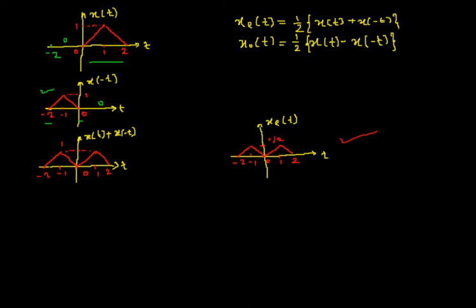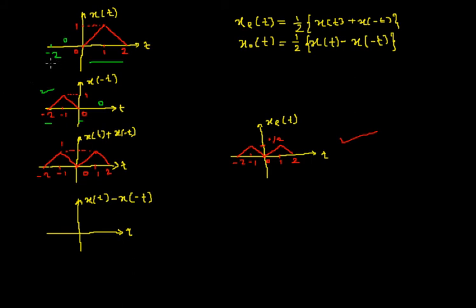The next task is to draw the odd part of the signal. For that, I first need to subtract the signals X(t) and X(-t). The x-axis is labeled t and the y-axis as X(t) minus X(-t). Starting from minus 2 to 0: X(t) is 0 and X(-t) is a triangular wave, so 0 minus the triangular wave gives the reflected version of that signal.